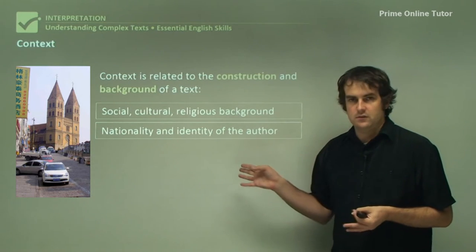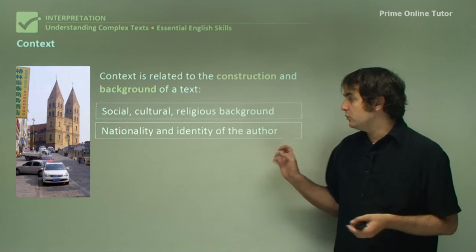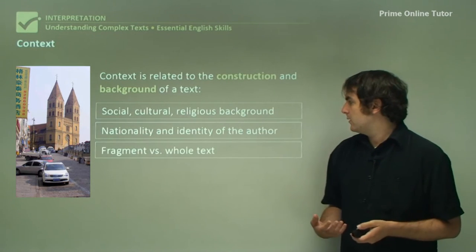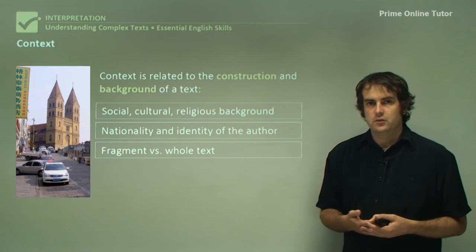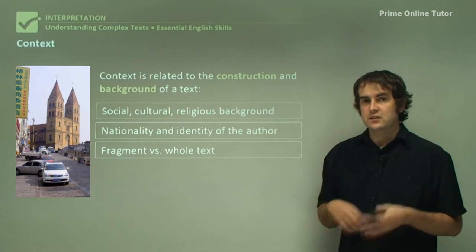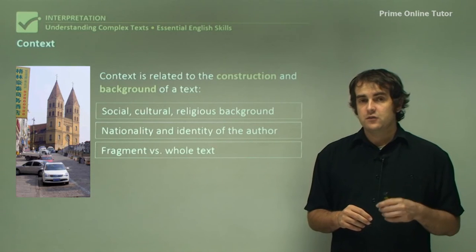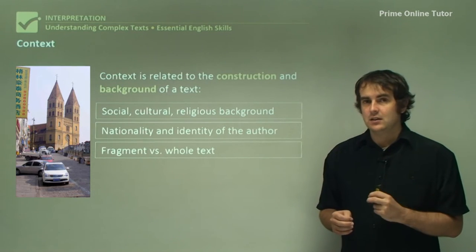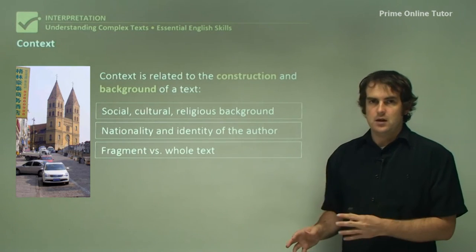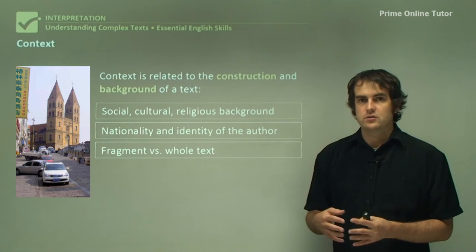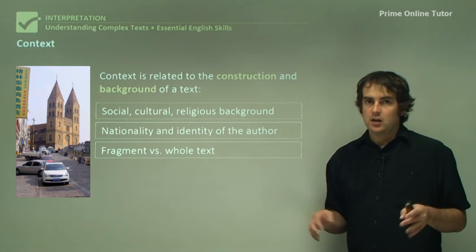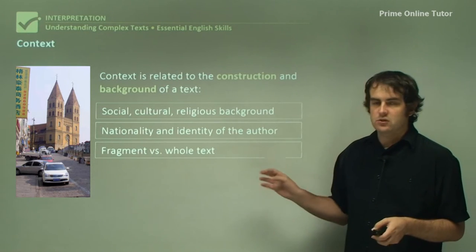You won't often mention things like the identity of the author explicitly, but you will consider it and factor it into how you would interpret the text. The fragment versus the whole text is also a key consideration — you need to make sure that the fragment you're analysing is representative of the whole text and that what you're saying about that fragment is consistent. If you're interpreting a particular language technique or a particular scene, you need to make sure it's consistent with the whole text. You're not constructing isolated chapters or lines — you're actually interpreting the whole text, and you'll be using small sections to justify it, so they all need to fit together.